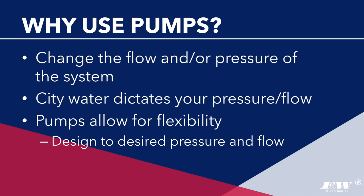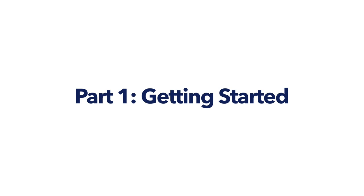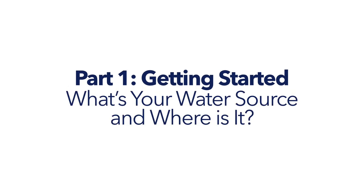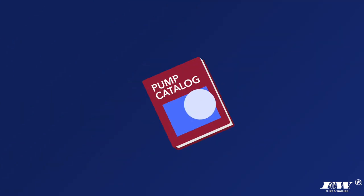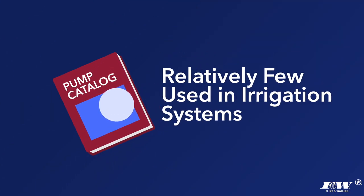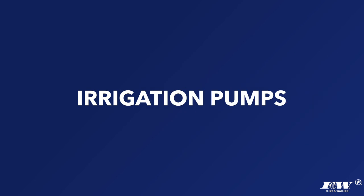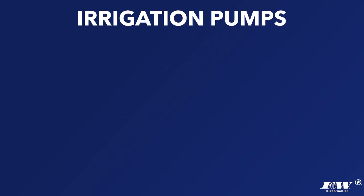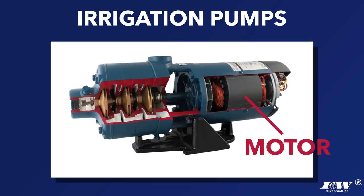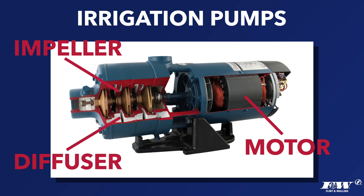For now, let's talk about what else you'll need to know to select the right pump. Out of the plethora of pump options in a typical catalog, relatively few are used in irrigation systems. All irrigation pumps have three main components: a motor that drives the pump, an impeller that spins and pushes water from the inlet outward, and a diffuser — a casing around the impeller that collects the moving water and directs it to the outlet.